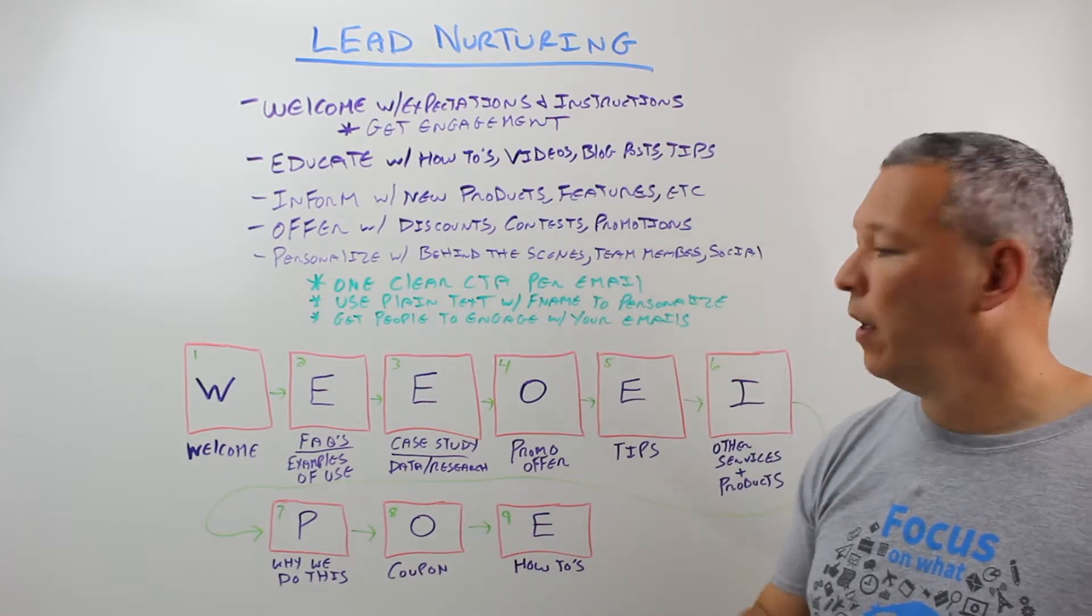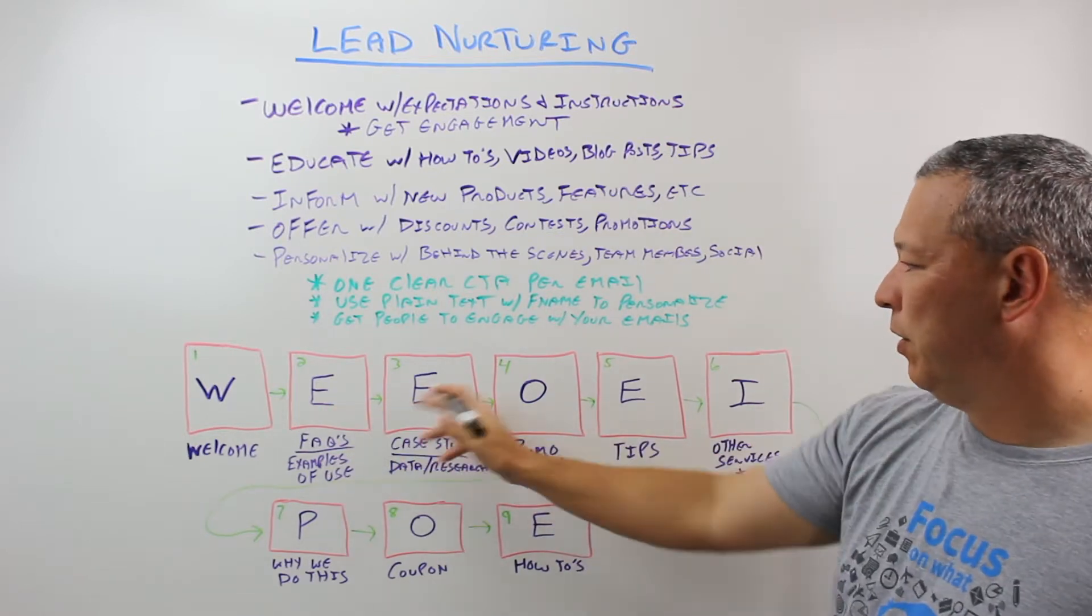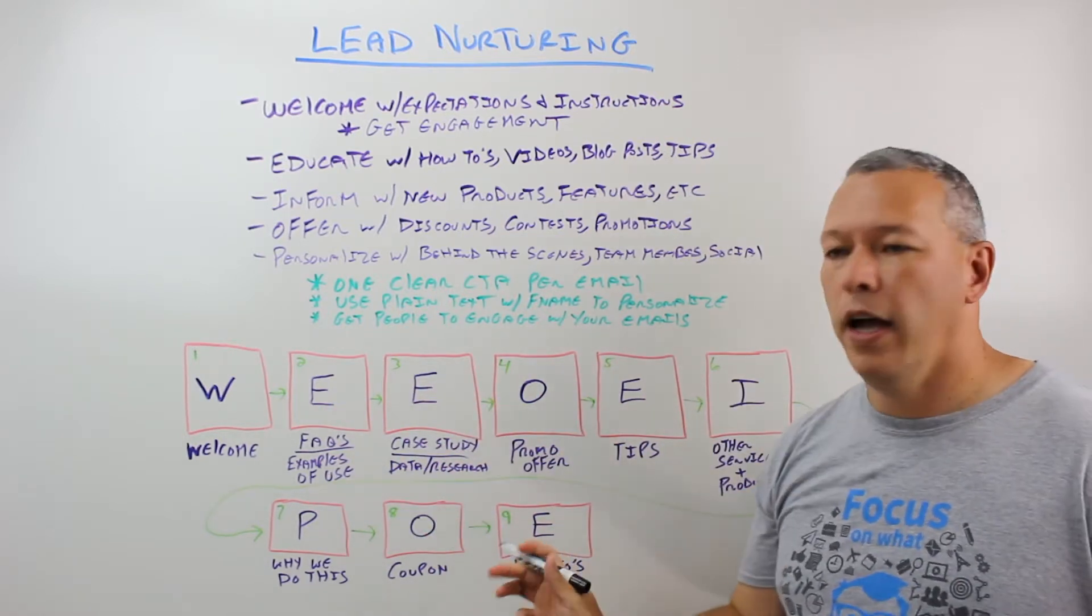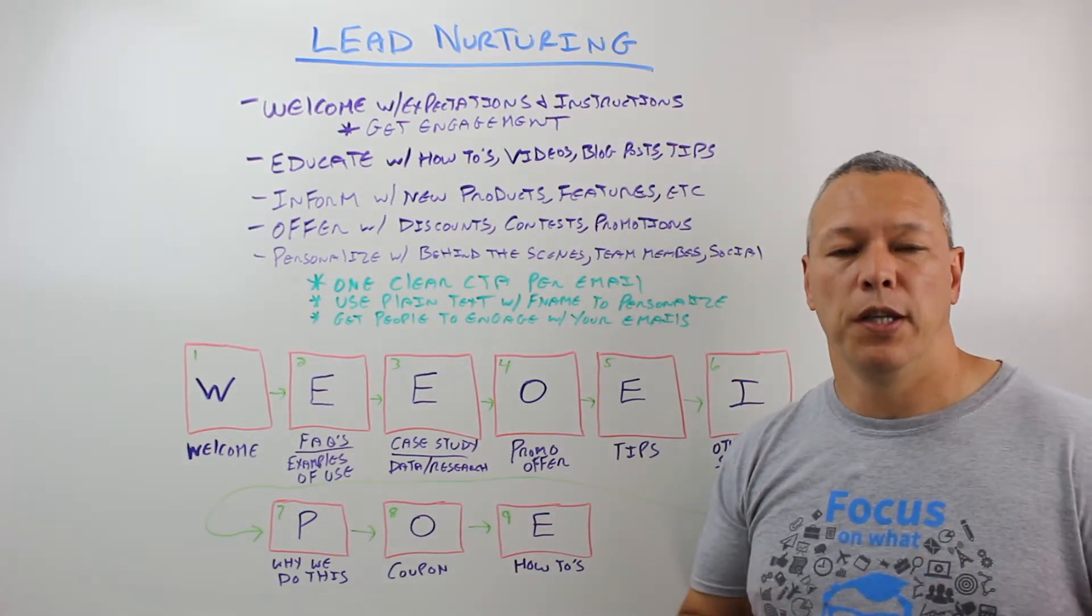Okay, so this sequence here is one, two, three, four, five, six, seven, eight, nine. Sprinkle them out every two, three days. You get about three weeks worth of content.